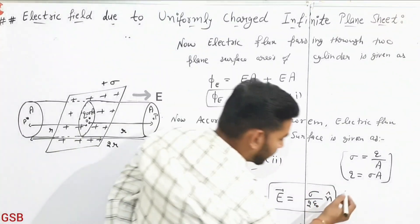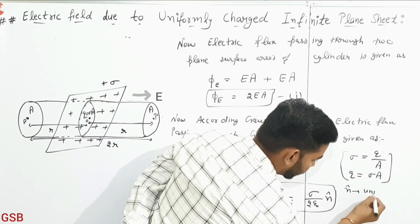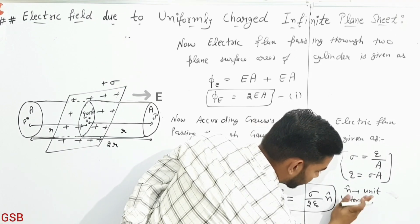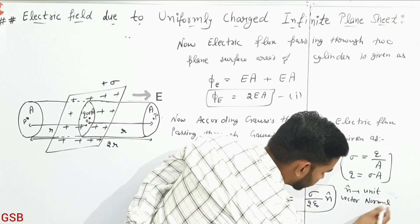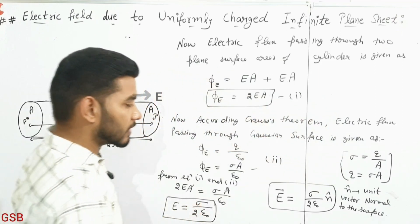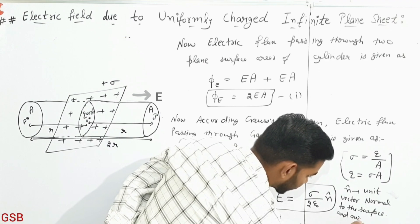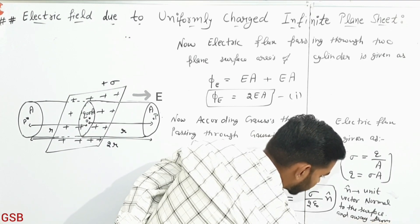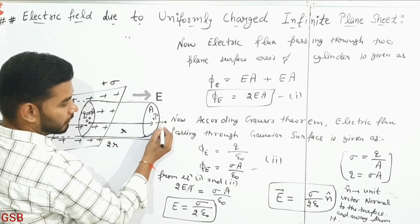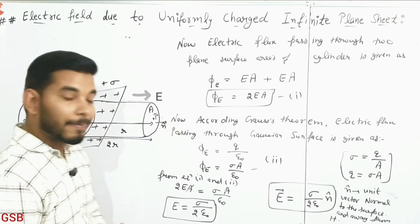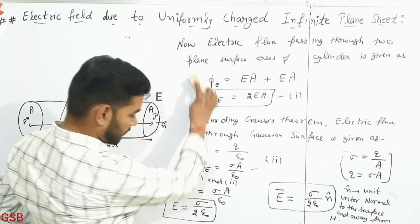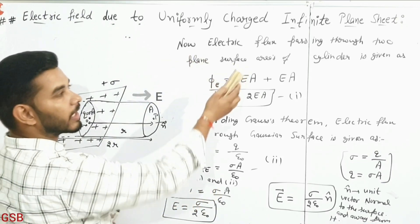Now writing the vectorial form: E vector equals sigma divided by 2·epsilon naught, multiplied by n-hat, where n-hat is the unit vector normal to the surface and pointing away from it. So this is the direction of the electric field.